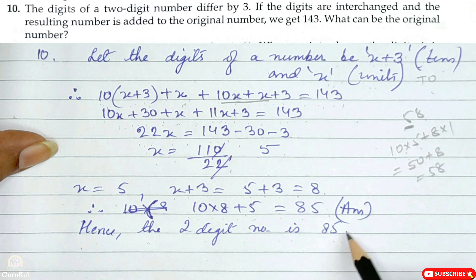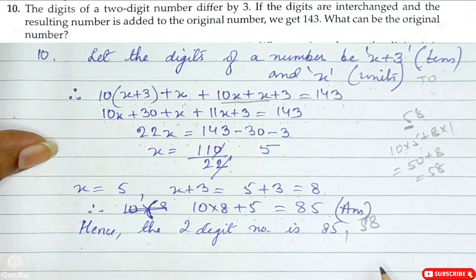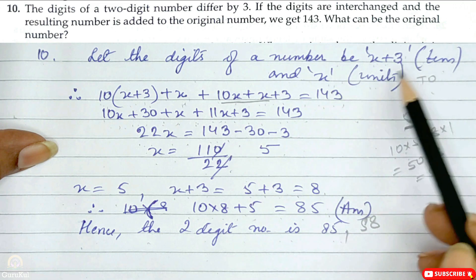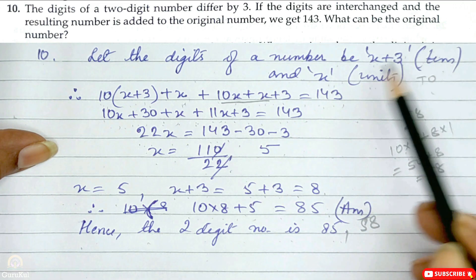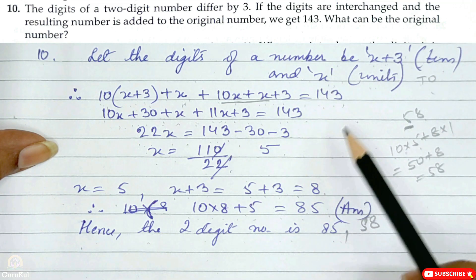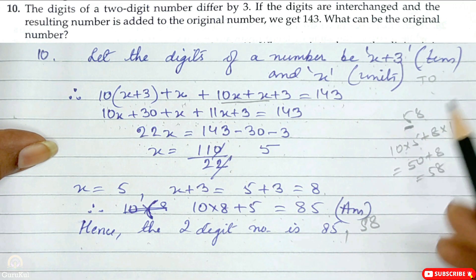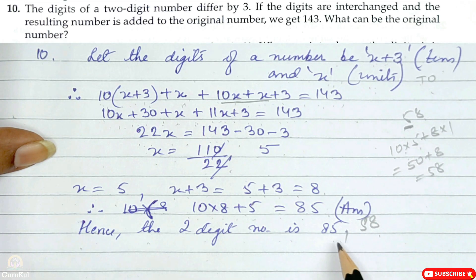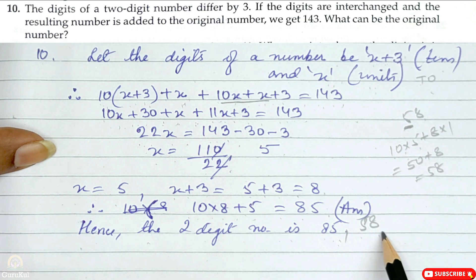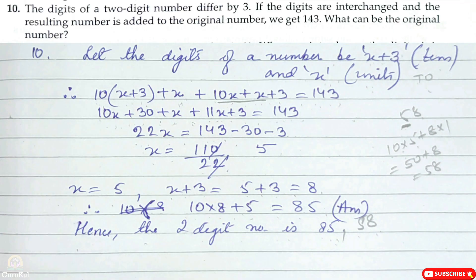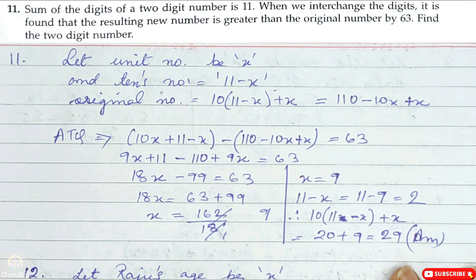The expanded form gives 10×8 plus 5 is equal to 85. Hence the two-digit number is 85. Note that 58 is also a valid answer, since you could have assigned tens = x and units = x plus 3 instead.